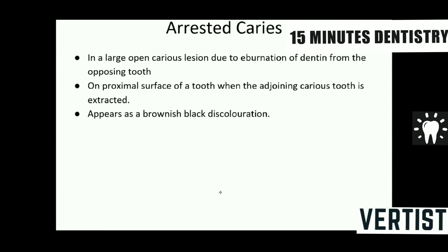Caries can get arrested when the sharp cusp of the opposing tooth grinds and polishes a large open pit and fissure caries lesion, leading to an ivory-like polished appearance called hibernation of dentine. Similarly, when two teeth have proximal caries and the more severely affected one is extracted, the remaining proximal surface becomes self-cleansing and the proximal caries can also get arrested. Both these arrested lesions appear as brownish-black discolorations and the caries will not progress further.